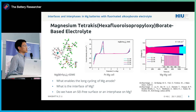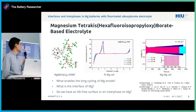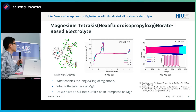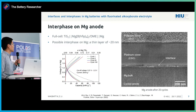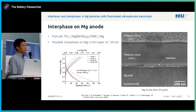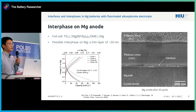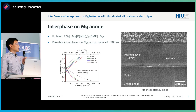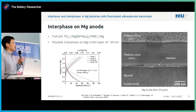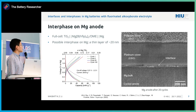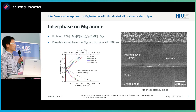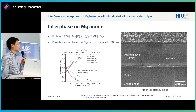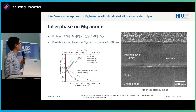Then we asked ourselves what is really happening — basically, what enables this long-term cycling of the magnesium anode, and what is the interfacial phenomenon? Do we really have a stable interface, or is it still interface-free or quasi-interface-free? With these questions, we started to look at the interface of the magnesium anode, trying to mimic more or less practical cell conditions.